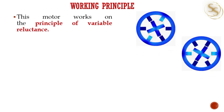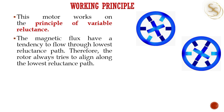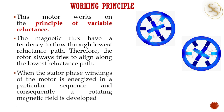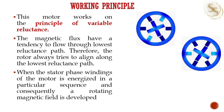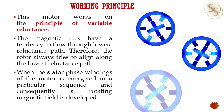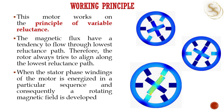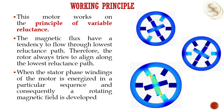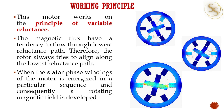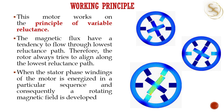A switched reluctance motor works under the principle of variable reluctance. The magnetic flux has a tendency to flow through the lowest reluctance path. When the stator phase windings of the motor are energized in a sequence, it will produce a rotating magnetic field. You can see the two pictures given at the right side here, which show the magnetic flux path between the stator and rotor.